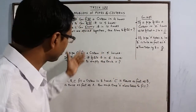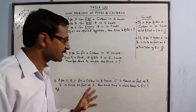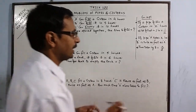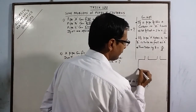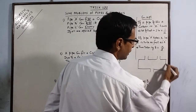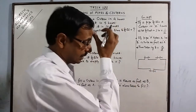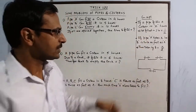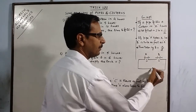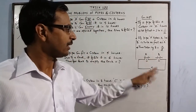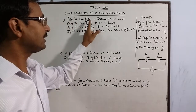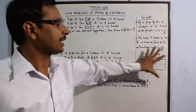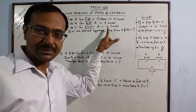Now we can solve some common problems. The first problem involves three pipes fitted to a system. Pipe A is an inlet pipe, pipe B is an inlet pipe, and pipe C is an outlet pipe — so two pipes fill it and one empties it. Pipe A alone fills the system in four hours, pipe B alone fills it in five hours, and pipe C alone can empty the full tank in ten hours.